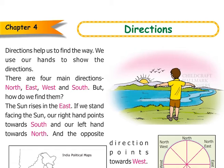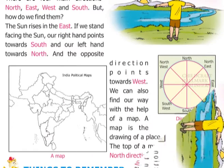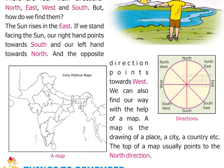The sun rises in the east. If we stand facing the sun, our right hand points towards south and our left hand towards north. And the opposite direction points towards west.